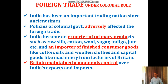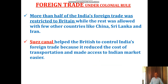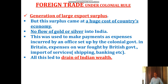To summarize, Britain maintained monopoly control over India's foreign trade. India became an exporter of primary products and an importer of finished consumer goods, with more than half of India's foreign trade restricted to Britain. The rest was with countries like China, and that volume was also very low. Most trade was with Britain only, and they built the Suez Canal to make transportation easier and access to the Indian market easier. In the next video class, the third one, we will try to understand the generation of large export surplus under the colonial period. Thank you.